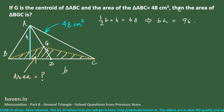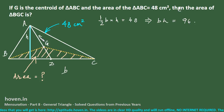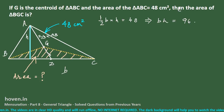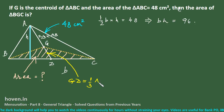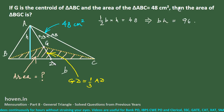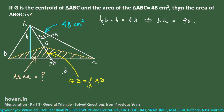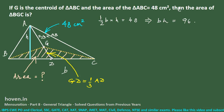The centroid divides the median such that AG = (2/3)AD and GD = (1/3)AD. Through G, we draw a line PQ parallel to the base BC. By the midpoint theorem, a line parallel to the base cuts the other side in the same proportion.